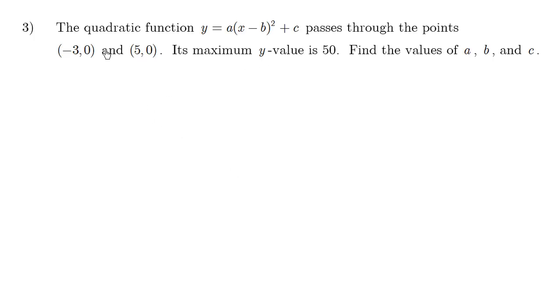Let's try another quadratic function problem, number 3. The quadratic function y equals a(x minus b) squared plus c passes through the points (-3, 0) and (5, 0). Its maximum y value is 50. Find the values of a, b, and c.